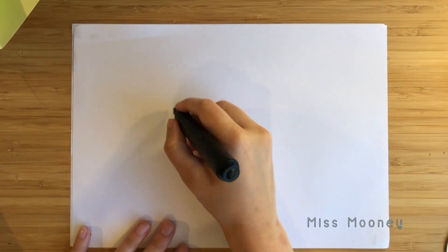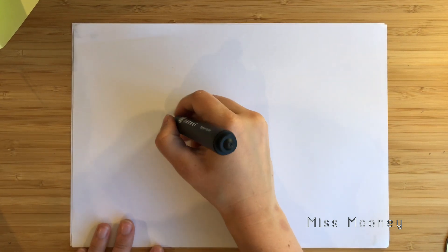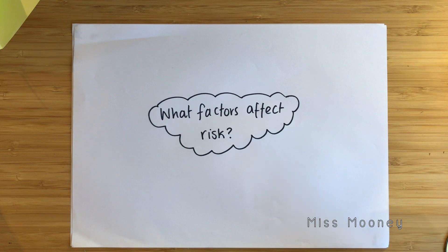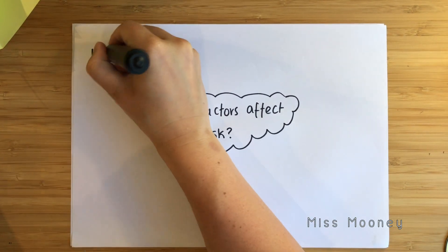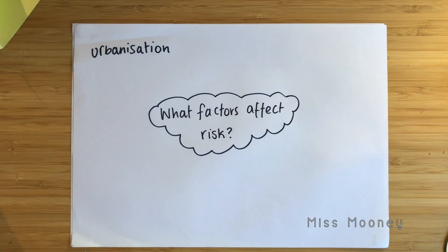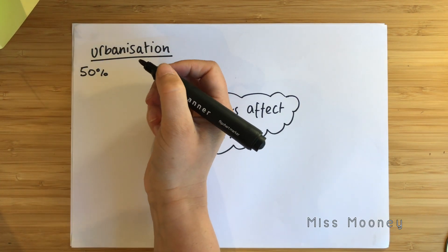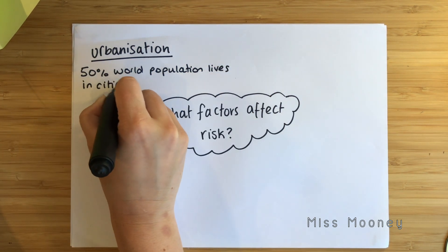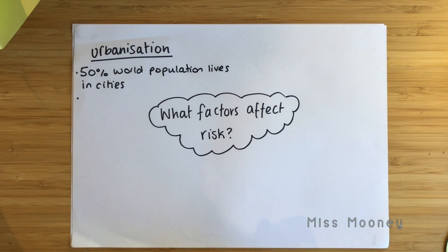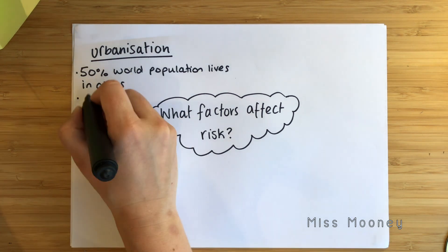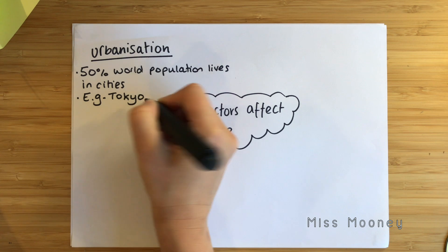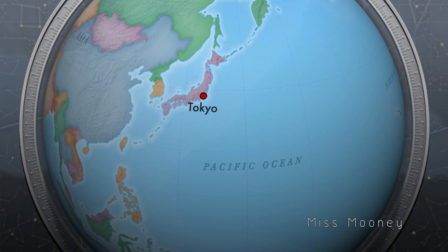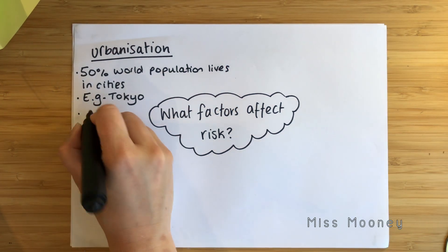There are lots of different factors increasing the risk from natural hazards. The first one is urbanisation — the percentage of population living in a city. Around 50% of the world's population now lives in a city, which is extremely high and increases the risk factor. For example, cities like Tokyo have a very densely populated population, meaning that when earthquakes affect them, quite a few people will be impacted.